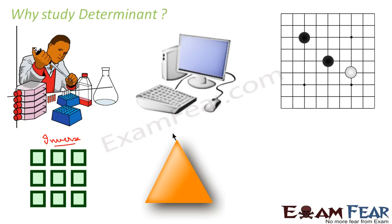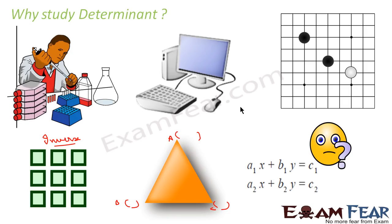If you want to find the area of a triangle and you know the coordinates of all three points A, B, and C, you can very easily find the area using a determinant. Also, if you have two equations — a1x + b1y = c1 and a2x + b2y = c2 — you can solve this system using determinants. So determinants are widely used in science, computers, math, engineering, and many other places — that is why we will study them.